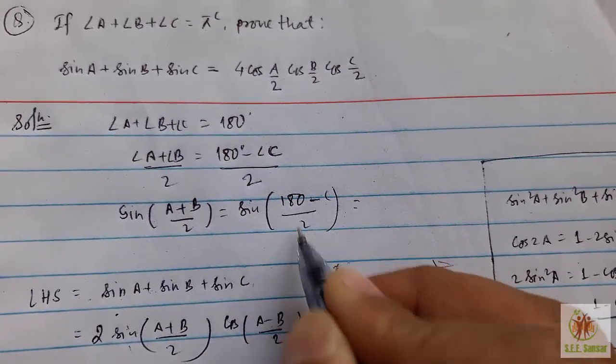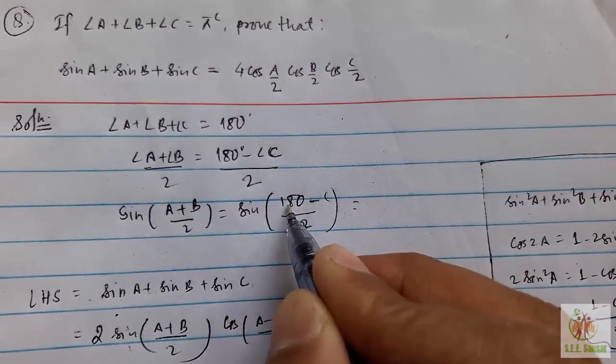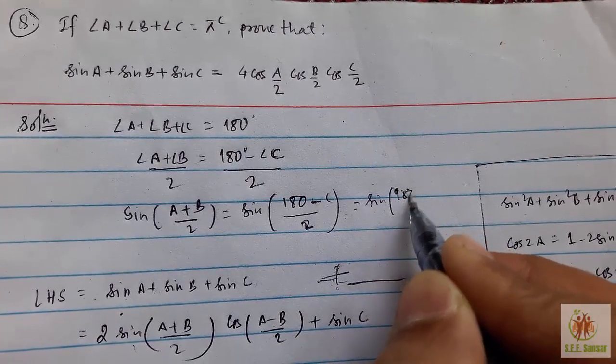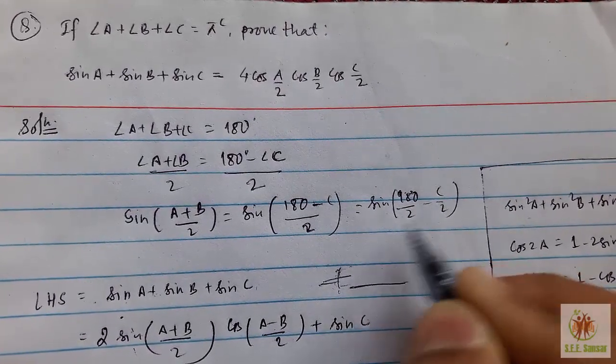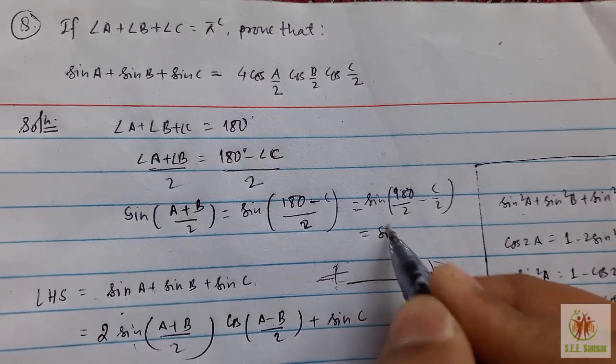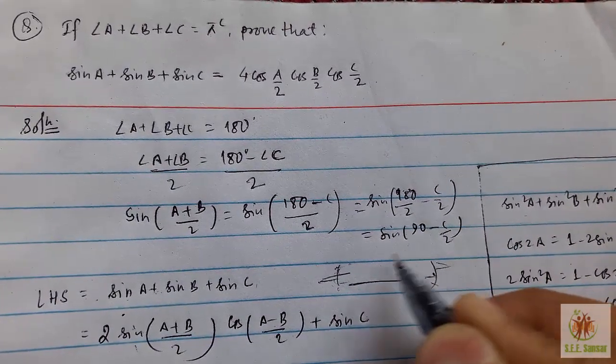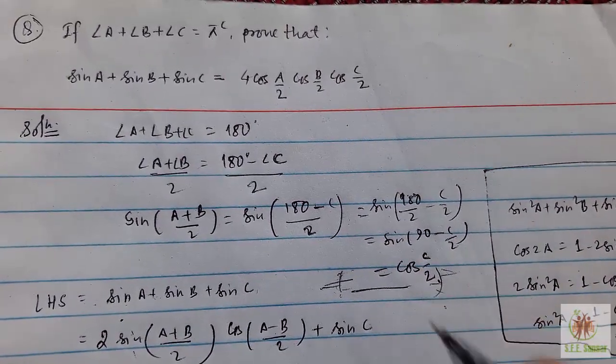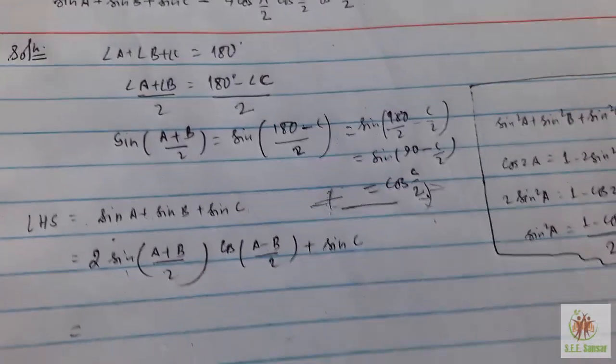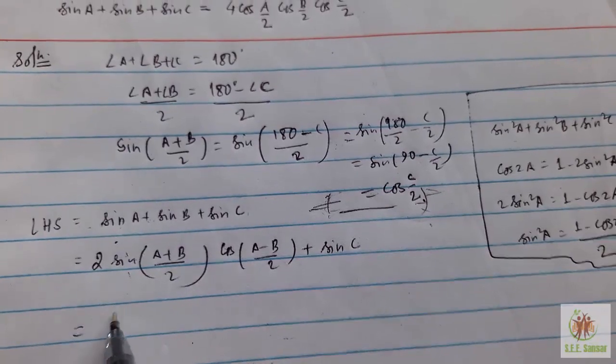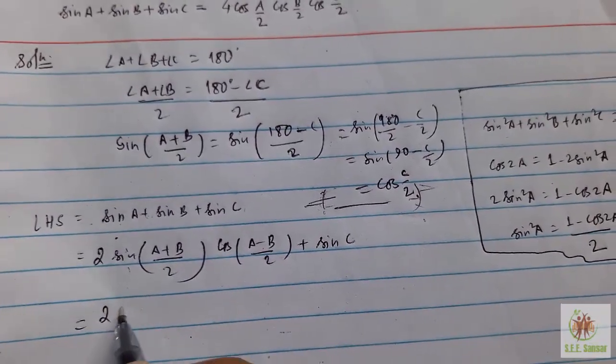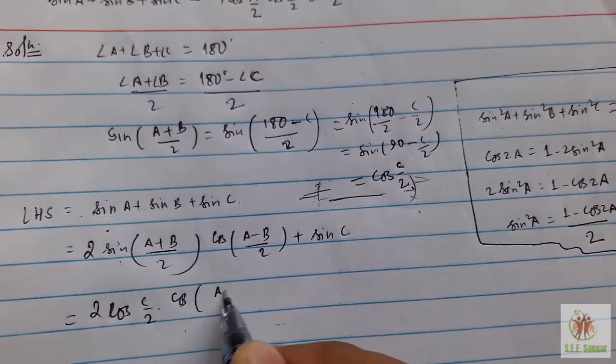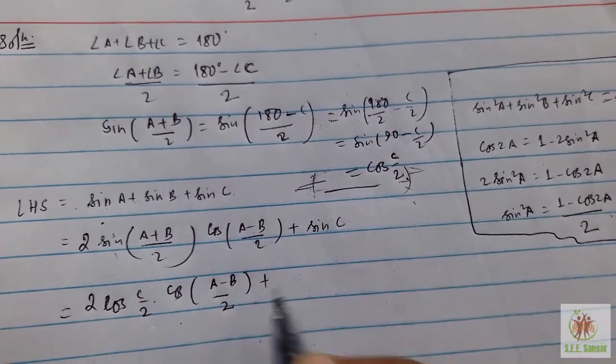So sin((A+B)/2), divide by 2, this angle C, so simply sin((A+B)/2) equals sin((180° - C)/2). Distribute this 2 to 180 and C, it becomes 180/2 - C/2. This is 90° - C/2, which equals cos(C/2).